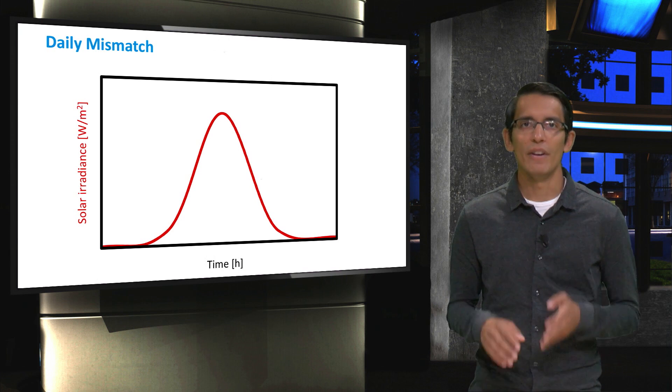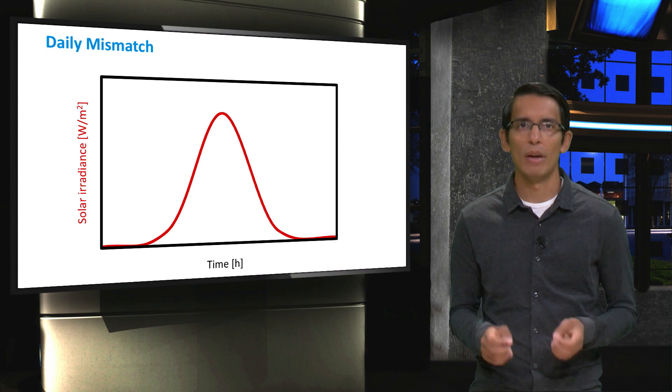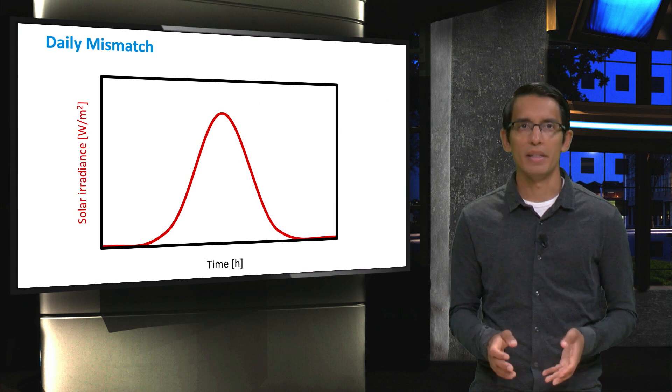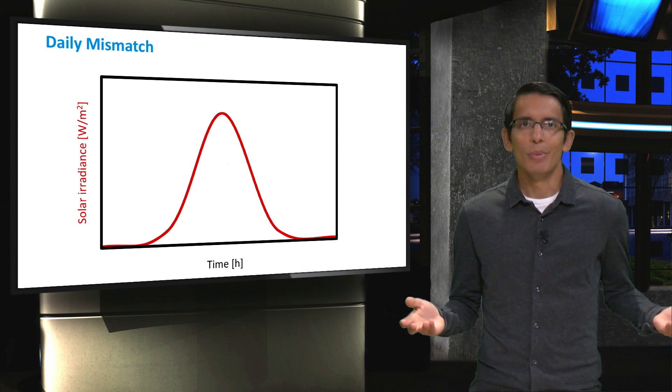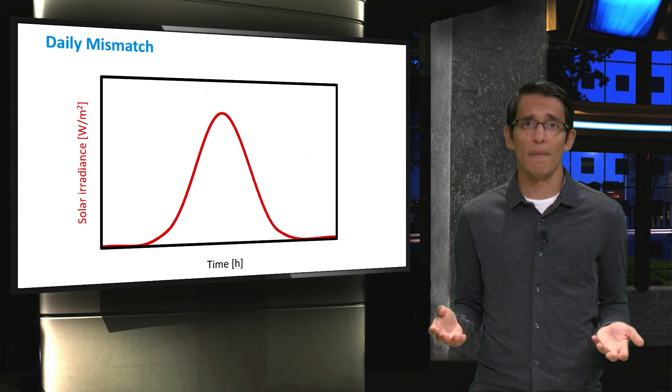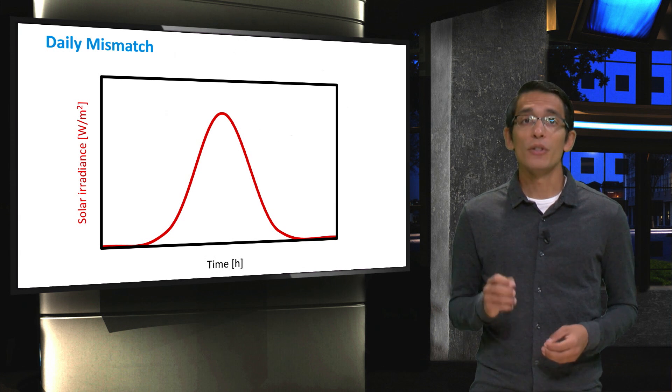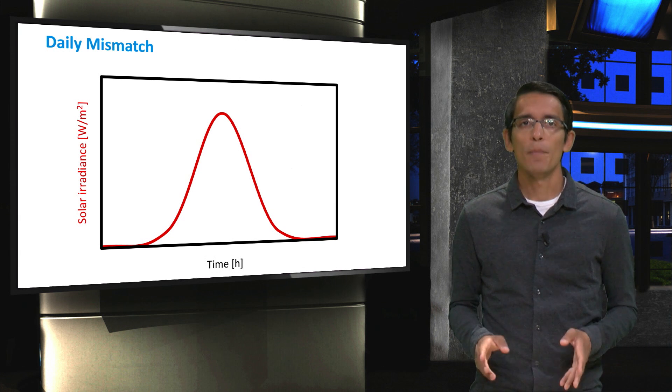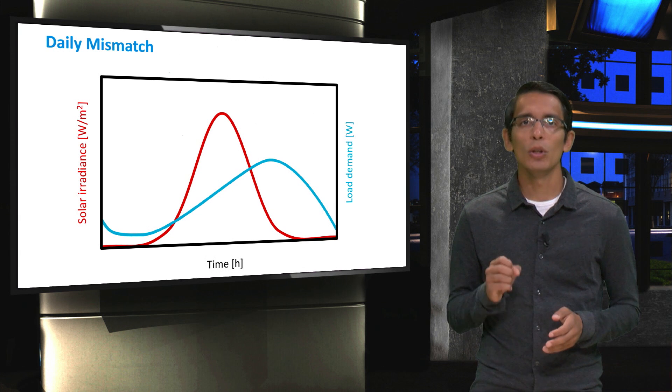One major reason is the mismatch between supply and demand. Here we have a typical solar irradiance curve throughout the day. There's a peak around the middle of the day and no irradiance during the night time. However, do we turn on all our electricity when the sun comes up and turn everything off at night? No, things don't work that way. Now, in blue you see a typical load-demand curve.